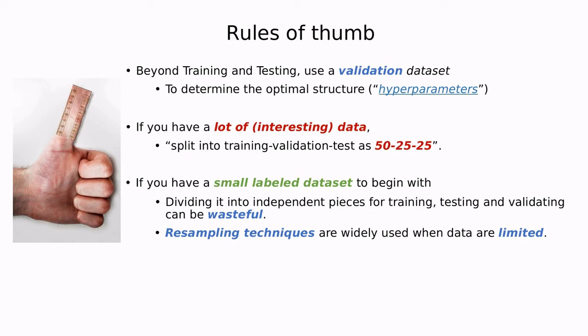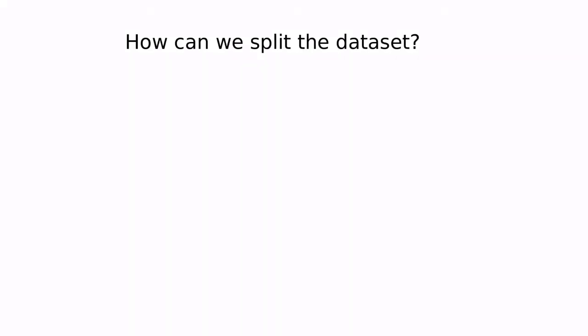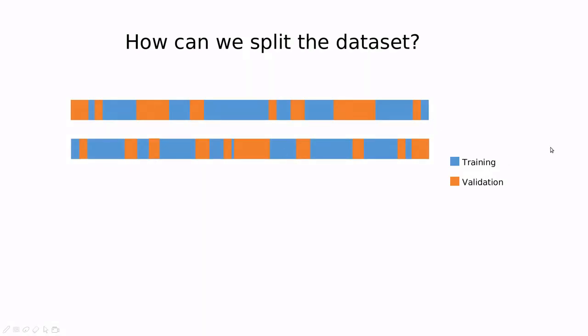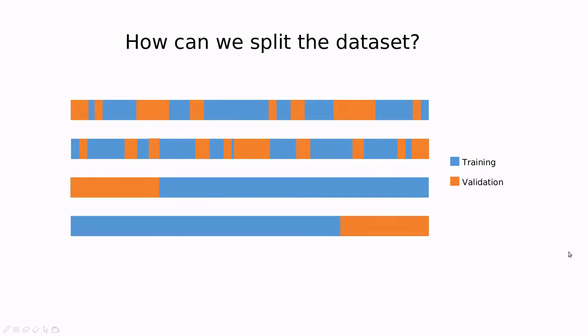But this is only if we have a huge amount of data. What if we have a small data set? In this case, this splitting is going to be wasteful of information, because only 50% of the data is used to train. So in this case, we're going to use resampling. Resampling basically means that we're going to use almost 100% of the data set, but in a smart way. But then we have this question in mind: how can we split the data set in the smartest possible way? We have a lot of degrees of freedom in our choice.